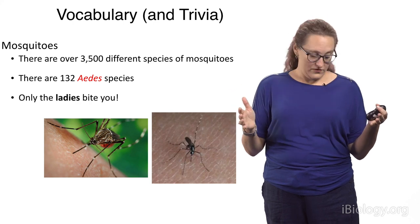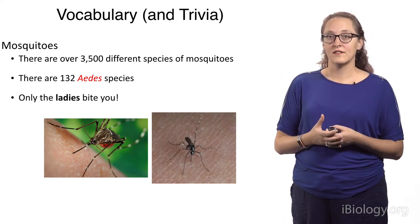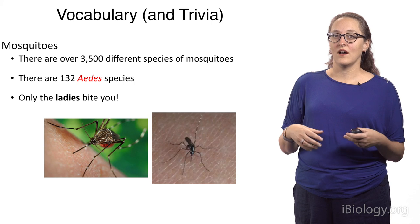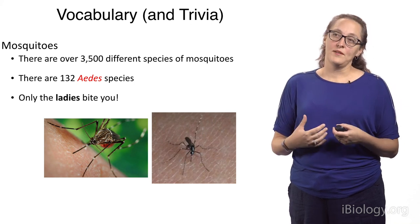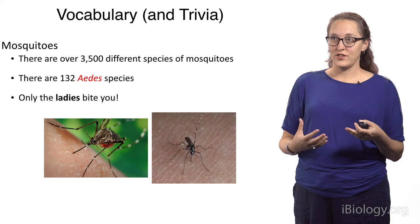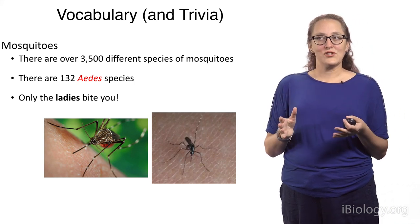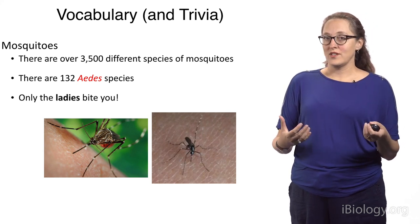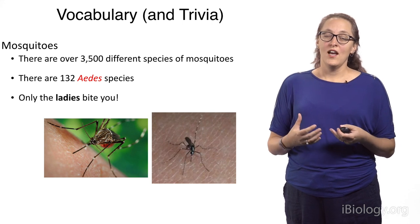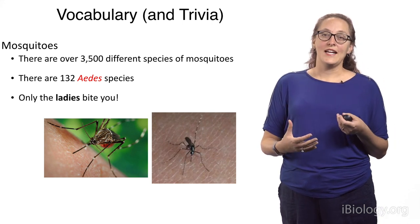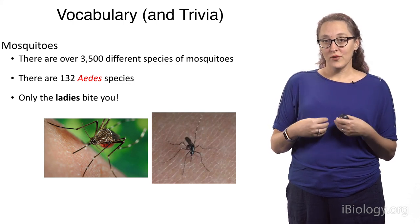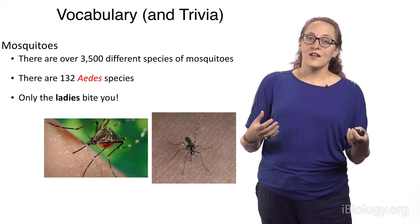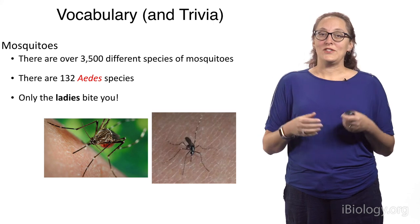Some trivia for the next time you're at a party: there are about 3,500 different species of mosquitoes, and 132 species of Aedes mosquitoes. I primarily study Aedes mosquitoes and their associated arboviruses. Here's an interesting tidbit — only the ladies bite you. Mosquitoes, as a food source, actually drink nectar, so they're pollinators. When the female bites you, it's not because she's hungry — it's because she needs the protein in your blood to make eggs and little baby mosquitoes. So when you see a mosquito biting you, it's going to be a female.